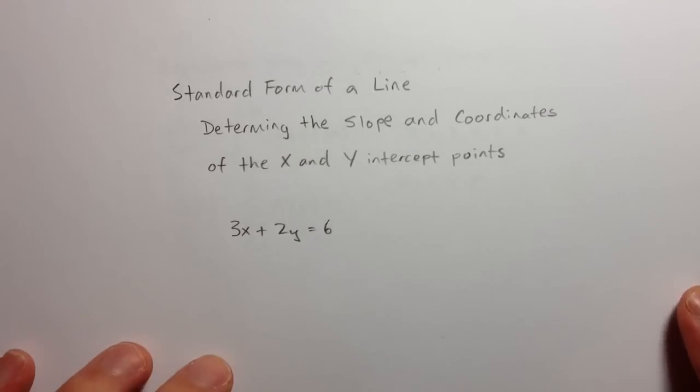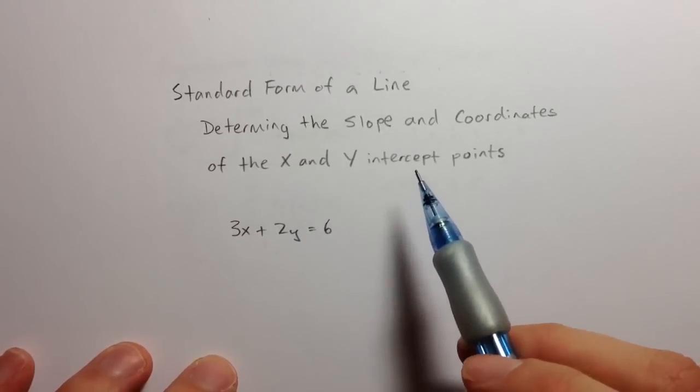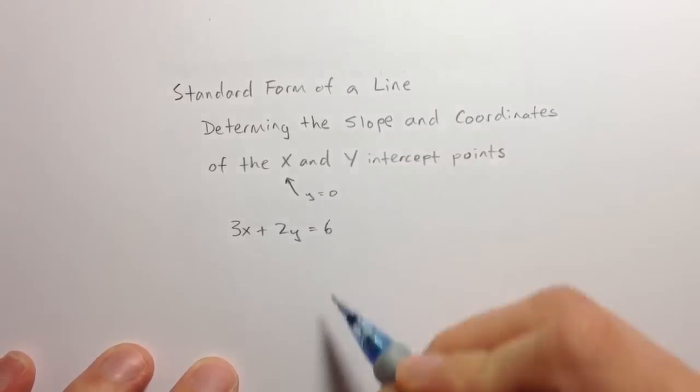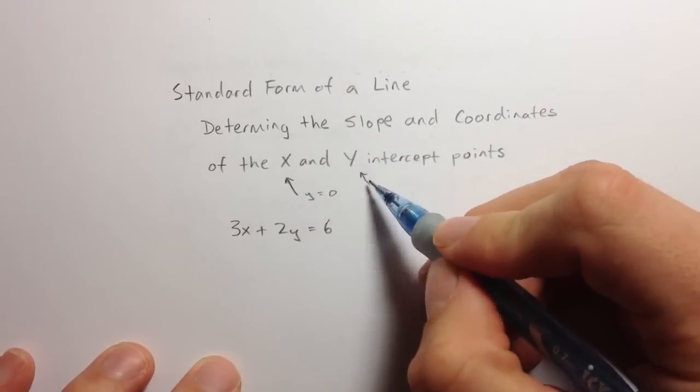In order to find the x and y intercept points, we need to, for the x intercept, set y equal to 0, and for the y intercept, set x equal to 0.